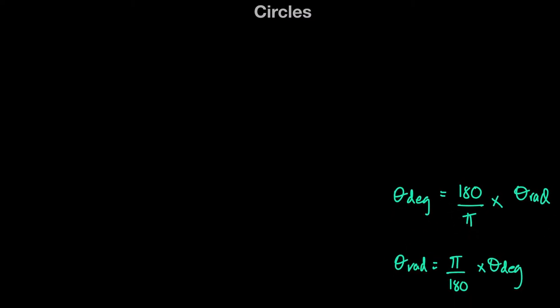Hey guys. So previously we learned about the radian measure of an angle and how we can convert an angle given in degrees to the angle in radians. We said that if an angle is given in degrees, we can convert it into radians by multiplying that angle by pi over 180. Similarly, if an angle is given in radians, it can be converted to degrees by multiplying by 180 over pi.